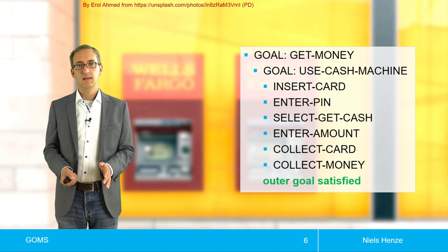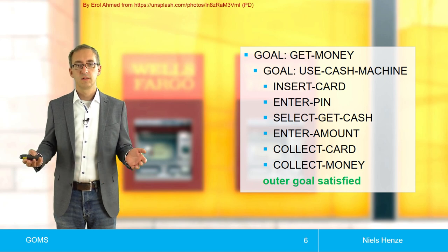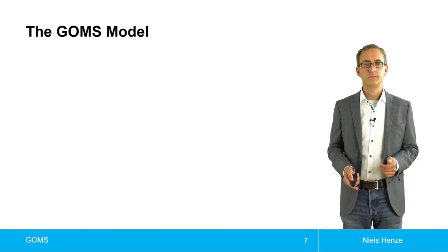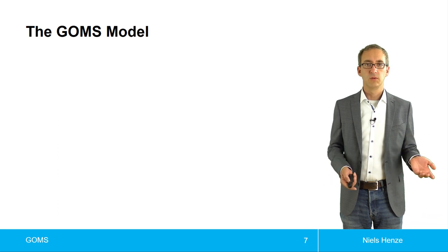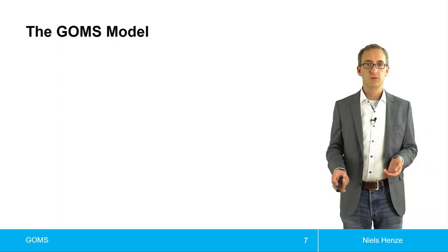And things like this can be analyzed. And for things like that, GOMS can be useful. So GOMS stands for Goals, Operators, Methods, and Selection Rules. So there are four different components.